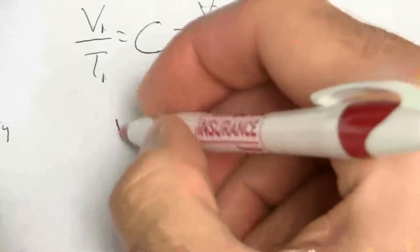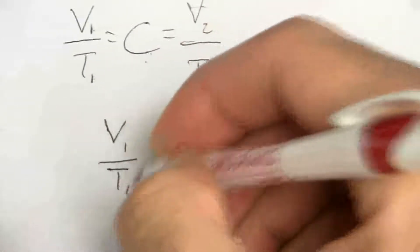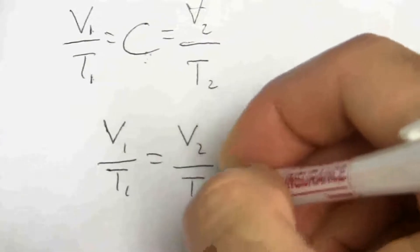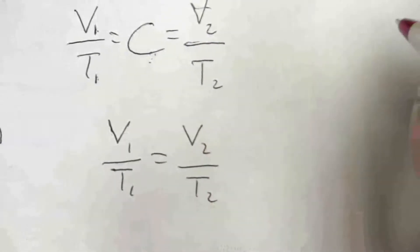It gives me that same constant. And so I can simplify this down to V1 over T1 equals V2 over T2.